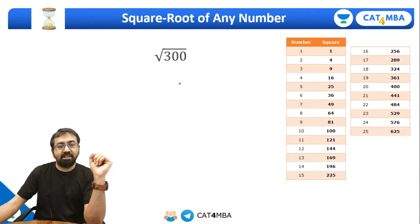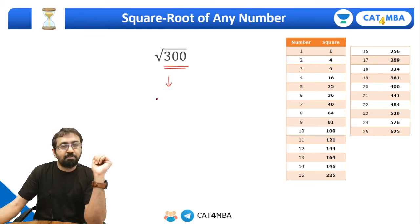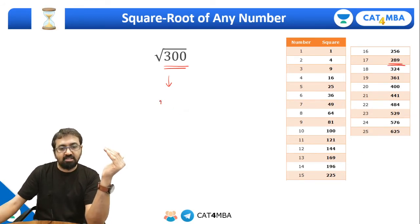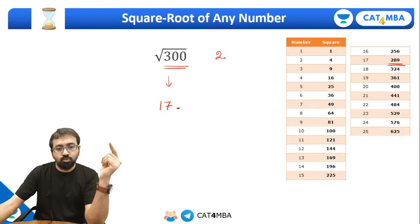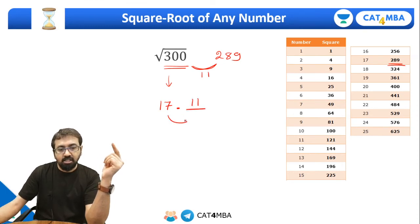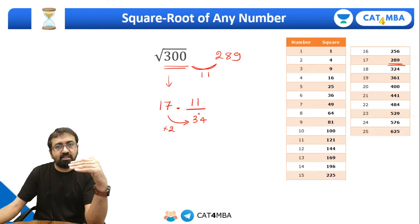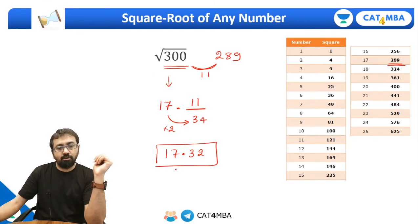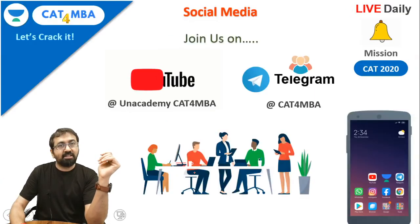Suppose I want to find out the square root of 300. Which perfect square number is just below 300? Seventeen squared is 289. So the answer is going to be 17 point something. The difference is 300 minus 289 equals 11. Divide by double of 17, which is 34. Eleven divided by 34 — since 11 divided by 33 is 0.33, so 11 divided by 34 will be less than that, approximately 0.32. So the square root of 300 is approximately 17.32 or 17.33, which closely matches the actual value.